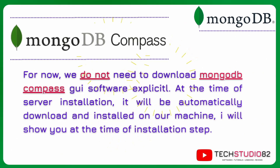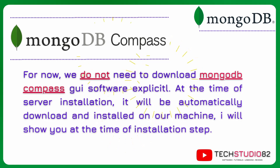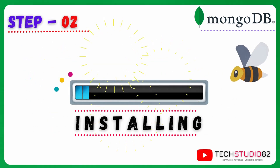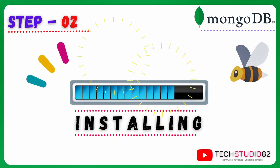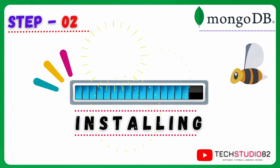Coming to MongoDB Compass, for now we do not need to download MongoDB Compass GUI software explicitly. At the time of server installation, it will be automatically downloaded and installed on our machine. I will show you at the time of the installation step. Let's move on to the second step, which is the installation part. We are going to install the downloaded software files on Windows 11 operating system.